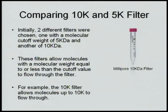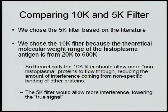We compared two filters: one 5 kilodaltons and one 10 kilodaltons. These filters allow molecules with a molecular weight equal to or less than the cutoff value to flow through the filter. We chose the 5K filter based on literature, and we chose the 10K filter because the theoretical molecular weight of the antigen is from 20 to 600K. So theoretically, the 10K should allow more non-histoplasma proteins to flow through, reducing the amount of interference.